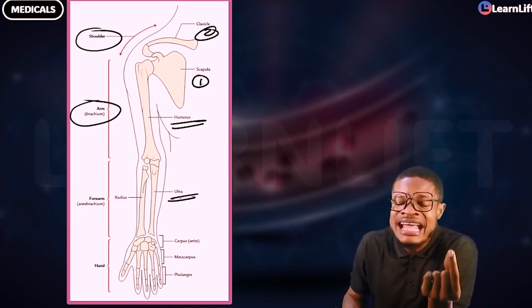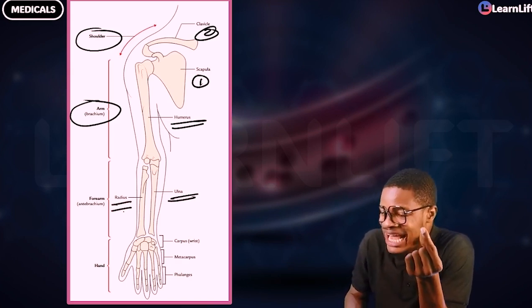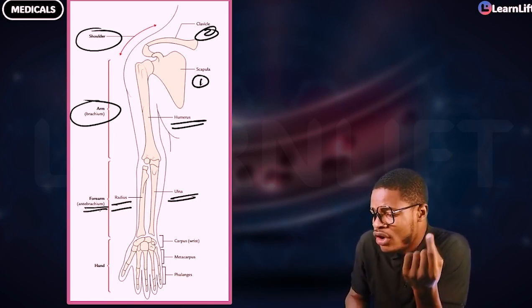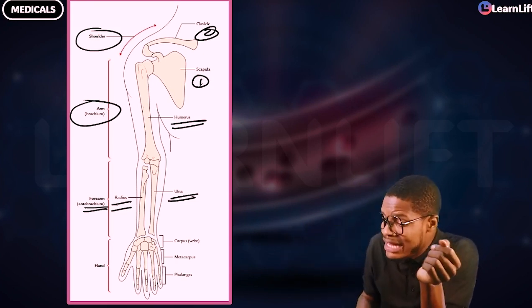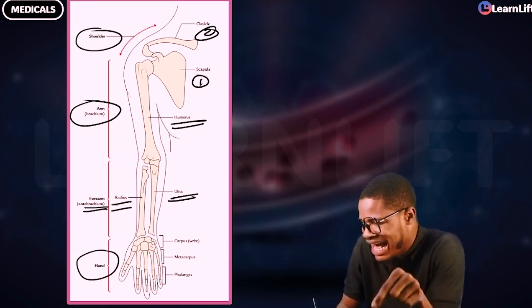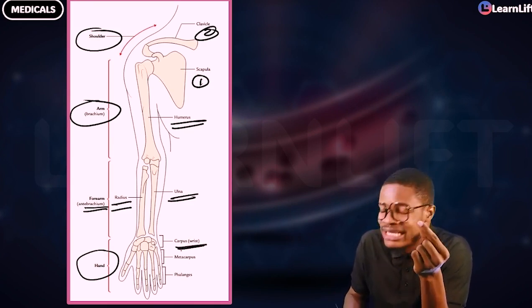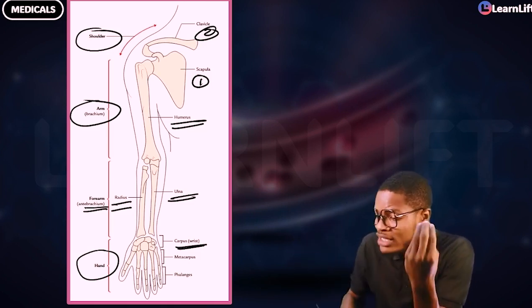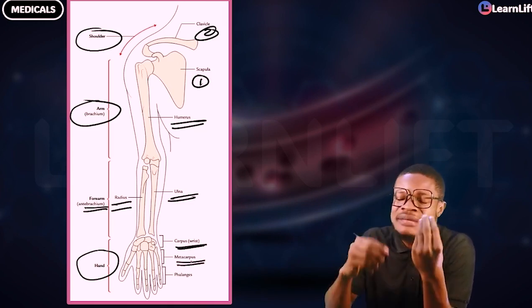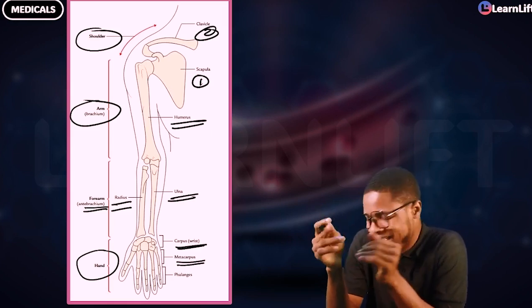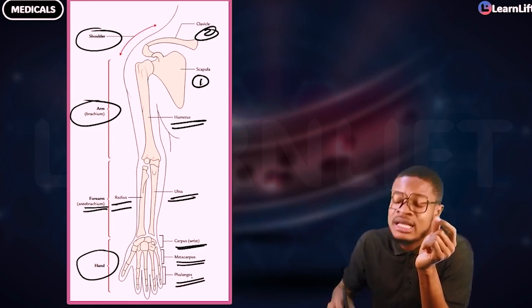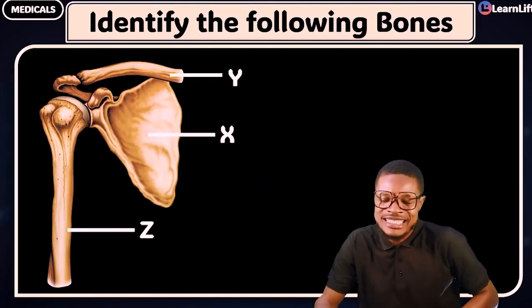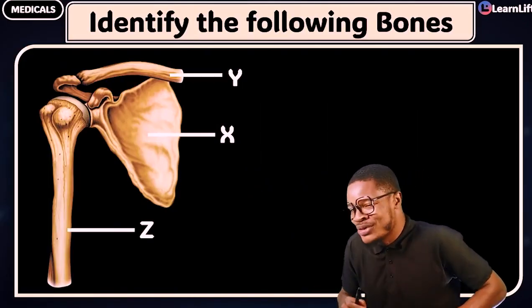The ulna is medial; the radius is lateral. Together they form the bones of the forearm, also called the antibrachium. Then you come to the hand. In the hand: number one, the carpus — also called the wrist. Bones of the wrist: eight altogether. Then the metacarpus — five bones of the hand. And lastly, the phalanges — how many phalangeal bones altogether? Fourteen phalangeal bones.